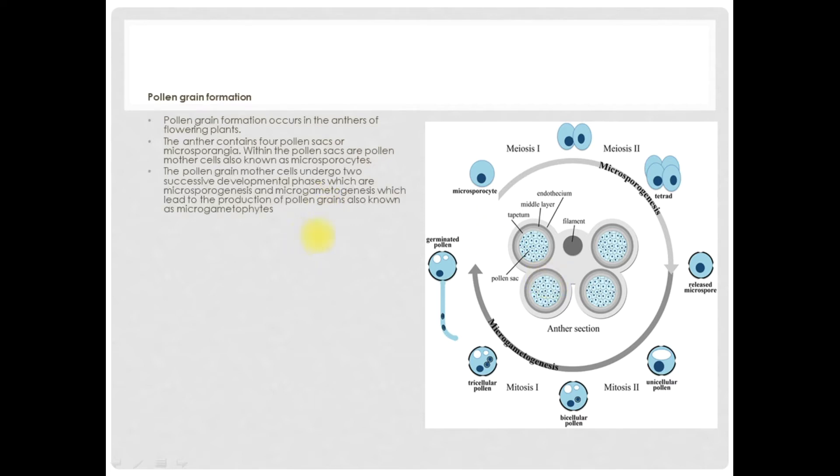The pollen grain mother cell undergoes two successive developmental phases which are microsporogenesis and microgametogenesis, which leads to the production of pollen grains also known as microgametophytes.